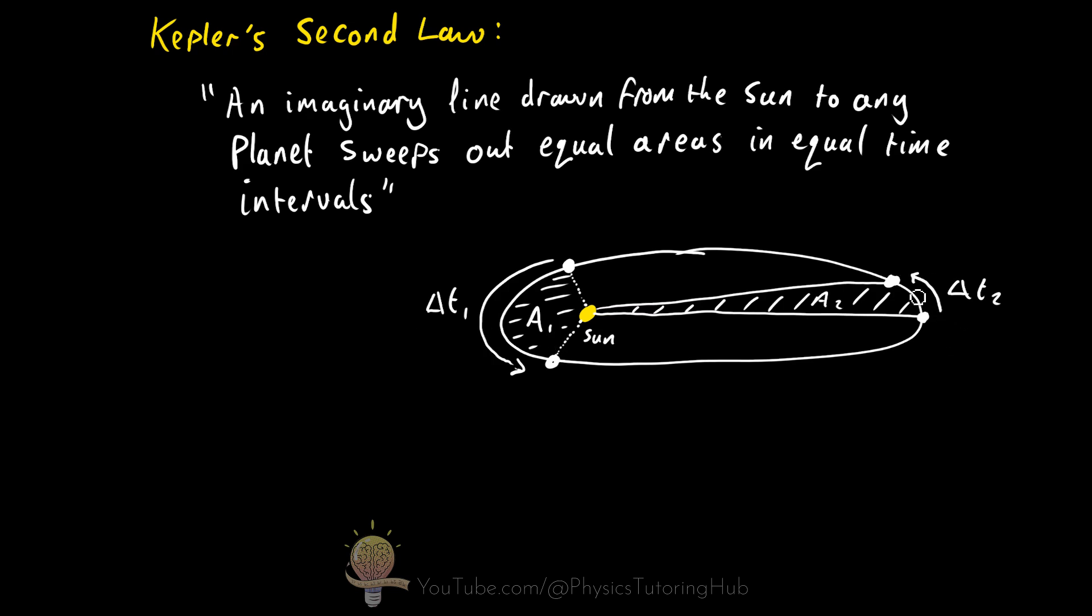When this planet is further away from the Sun, this imaginary line will sweep out exactly the same area as A1 in the same amount of time. So these two time intervals here are equal to one another. And so are these areas.